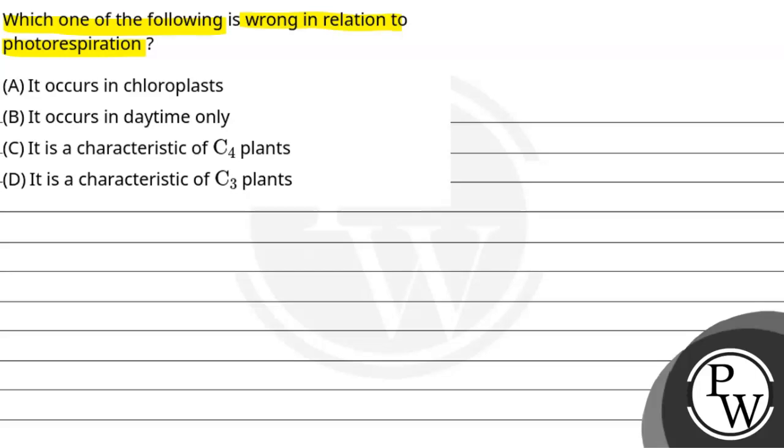Option A, it occurs in chloroplast. Option B, it occurs in daytime only. Option C, it is a characteristic of C4 plants and option D, it is characteristic of C3 plants.